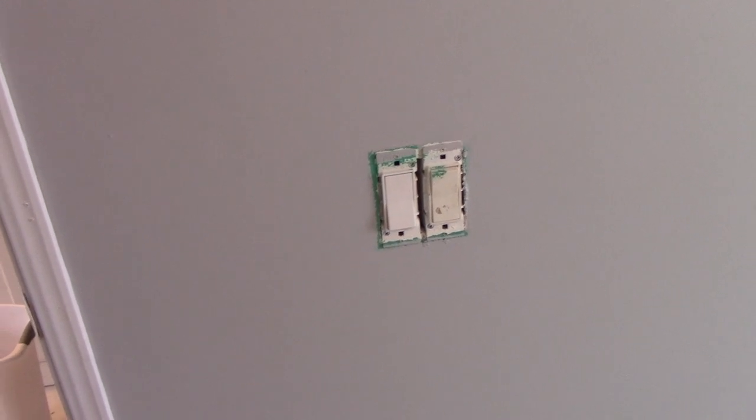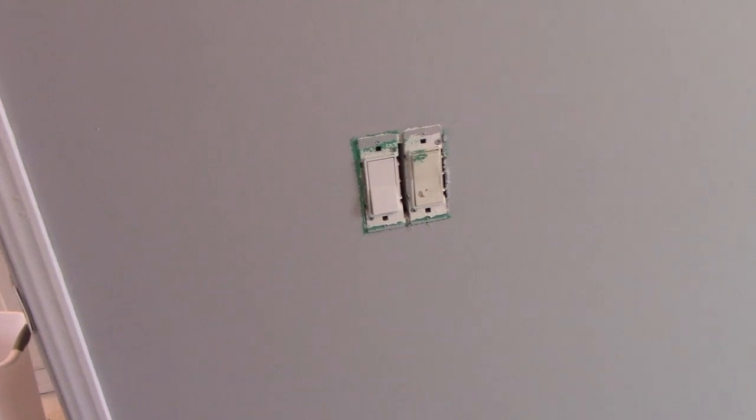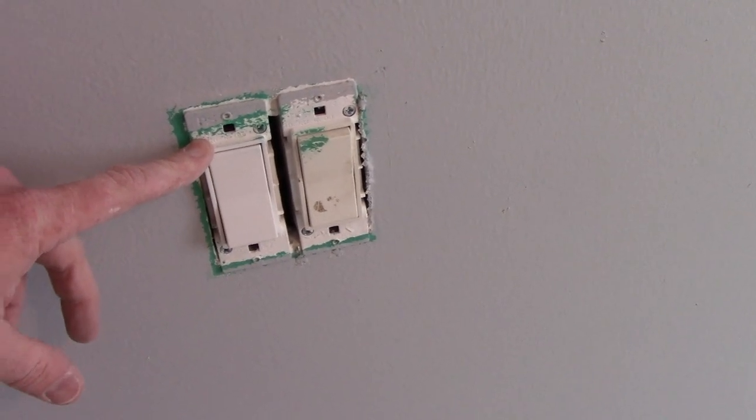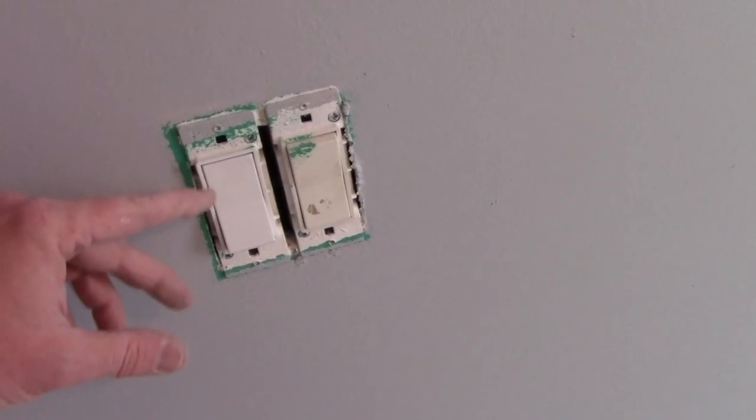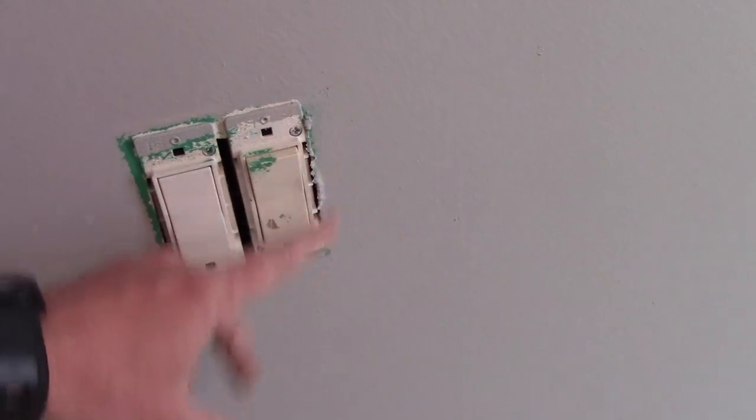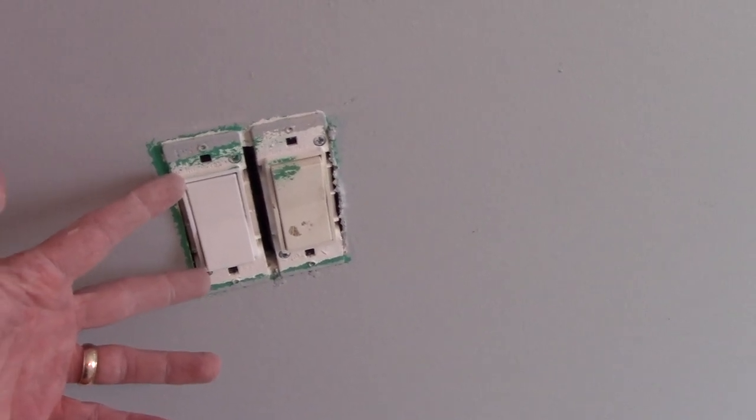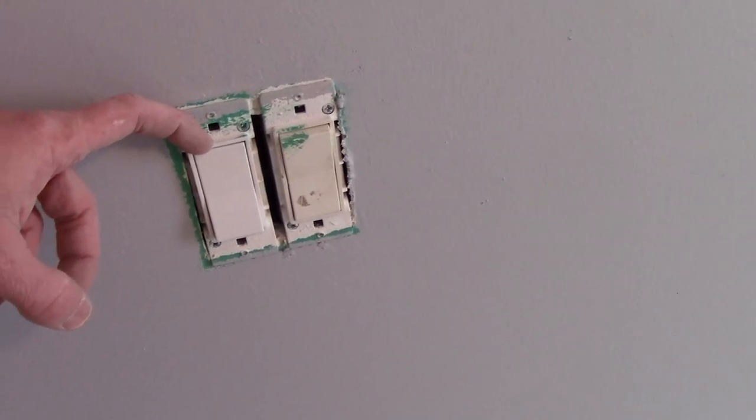All right, if you own a mobile home, or in this case a modular home that was built by a company that builds mobile homes, you may have switches and outlets that look something like this. And this is with the cover plate removed, but you can tell it's a non-traditional switch because it does not mount inside of the electrical box. It's just screwed right into the drywall and the wires are terminated inside of the switches themselves.